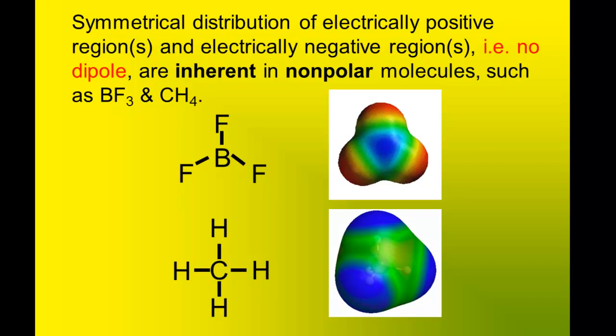Symmetrical distribution of electrically positive regions is inherent in non-polar molecules, such as BF3 and CH4. Next to each Lewis structure is the electrostatic potential map for the molecule. Notice the electrically negative regions are symmetrically placed in the BF3 molecule, and boron in the center is the electrically positive region. In CH4, carbon and hydrogen have very similar electronegativities, so there isn't too much localization of either electrically positive or electrically negative regions in the molecule.